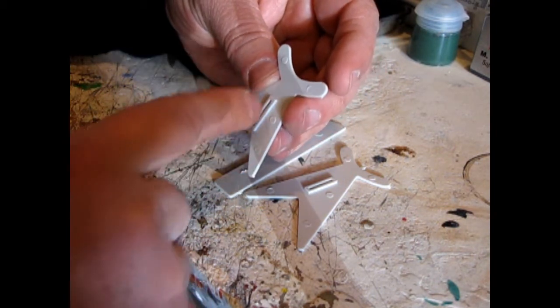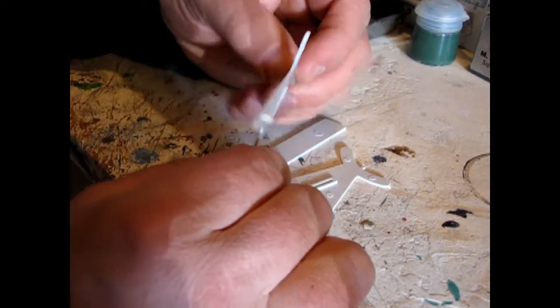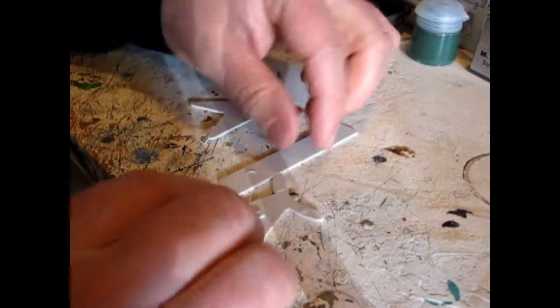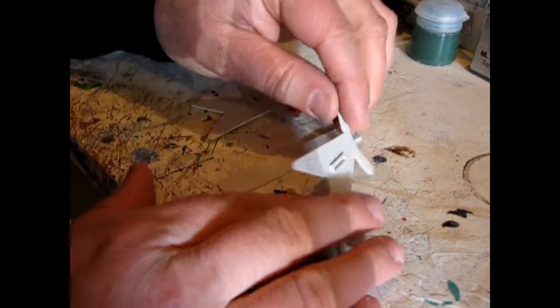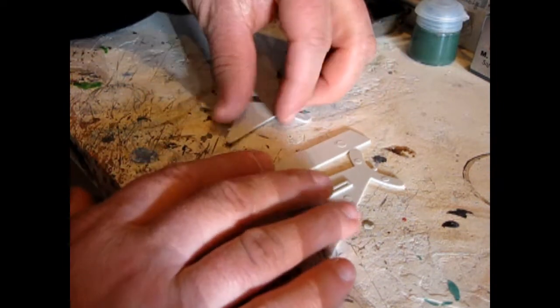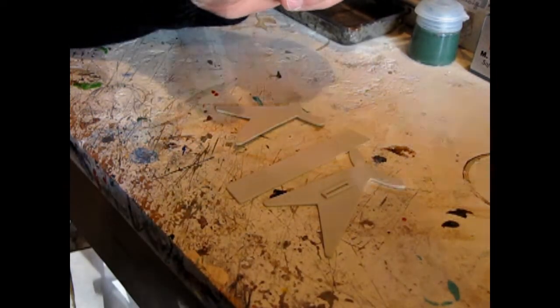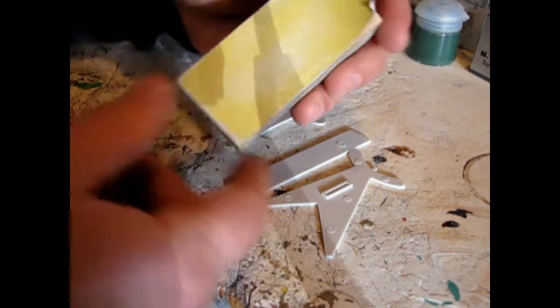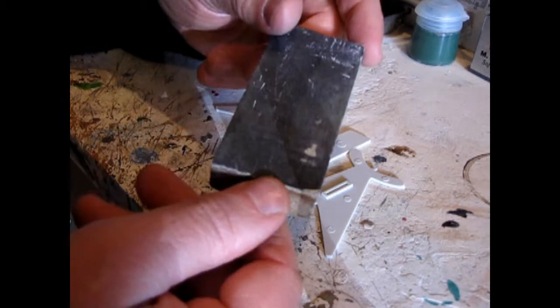And what these are is in the injection molding process, they sometimes put these pins in here to provide a little more plastic in that area or something. Or maybe for support so it doesn't warp as much. I'm not quite sure. However, these are injection molding marks. And what we want to do is, we've got our sandpaper block here. And we want to get rid of them.